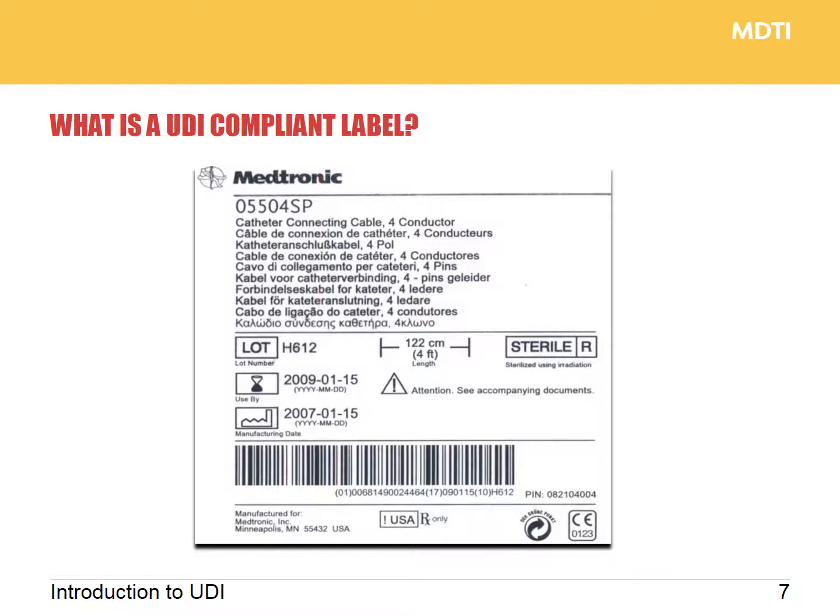In regards to an FDA compliant label, there are three main things to consider. The date format for the FDA must be YYYY-MM-DD when printed. If data and labels do not match, there is potential for product recall. And the barcode must be compliant to GS1 standards. Those are the three main things to consider when you are looking at an FDA compliant label.